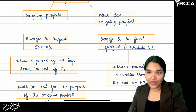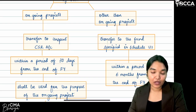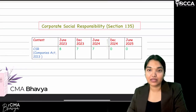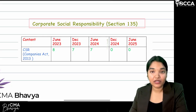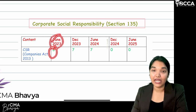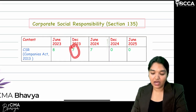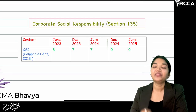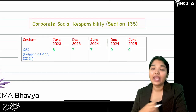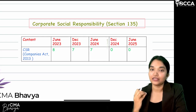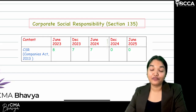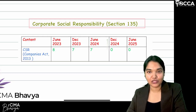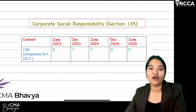We have successfully completed the Corporate Social Responsibility content. You can find this PDF in the Telegram channel — the link is in the description box below. This topic is very important from an exam perspective: in June 2023 it was 8 marks, December 2023 it was 7 marks, and June 2024 it was 7 marks. With this content you can answer any CSR question from the Companies Act 2013, including MCQs. Please like, share, and comment, and share it with your friends for a quick CSR revision.